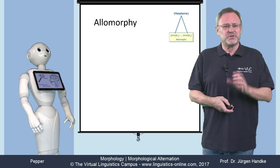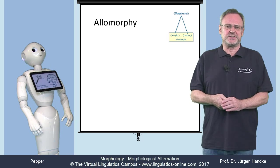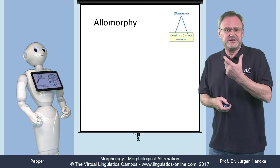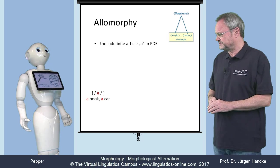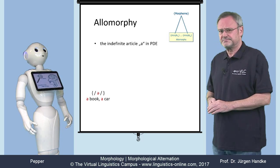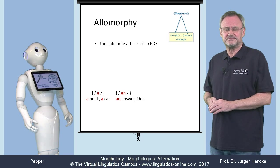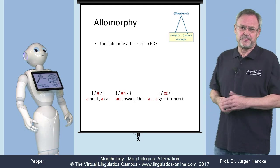As you know, morphemes may have different shapes under different circumstances. Consider the shape of the indefinite article 'a' in English. Yes, we have 'a book' and 'a car', then 'an answer' and 'an idea', and sometimes even strong forms, such as 'a great concert'.